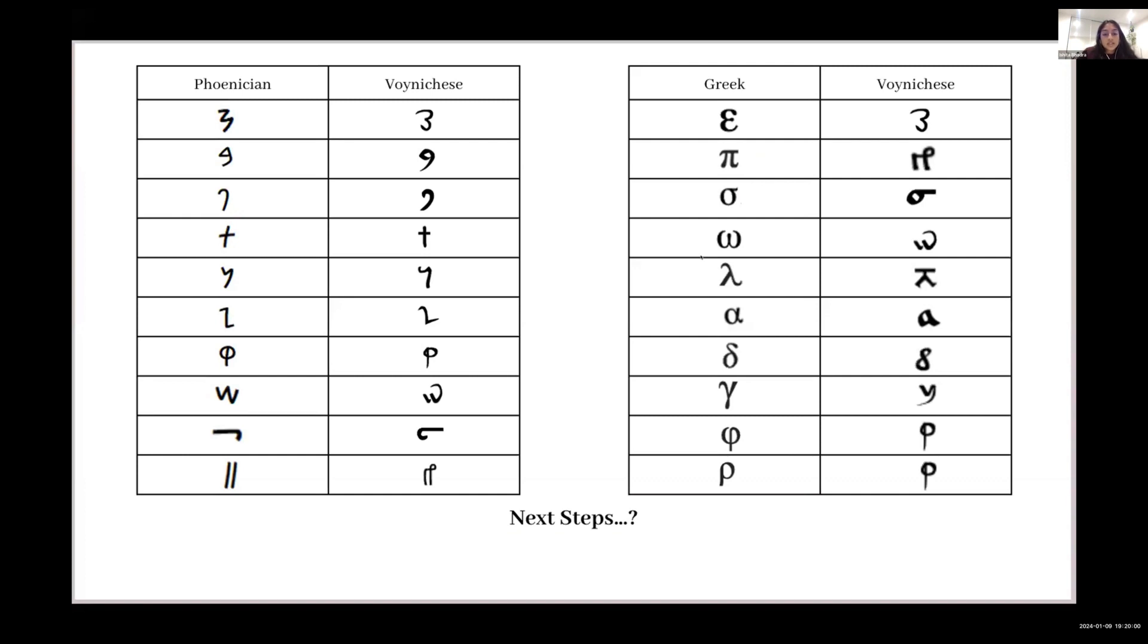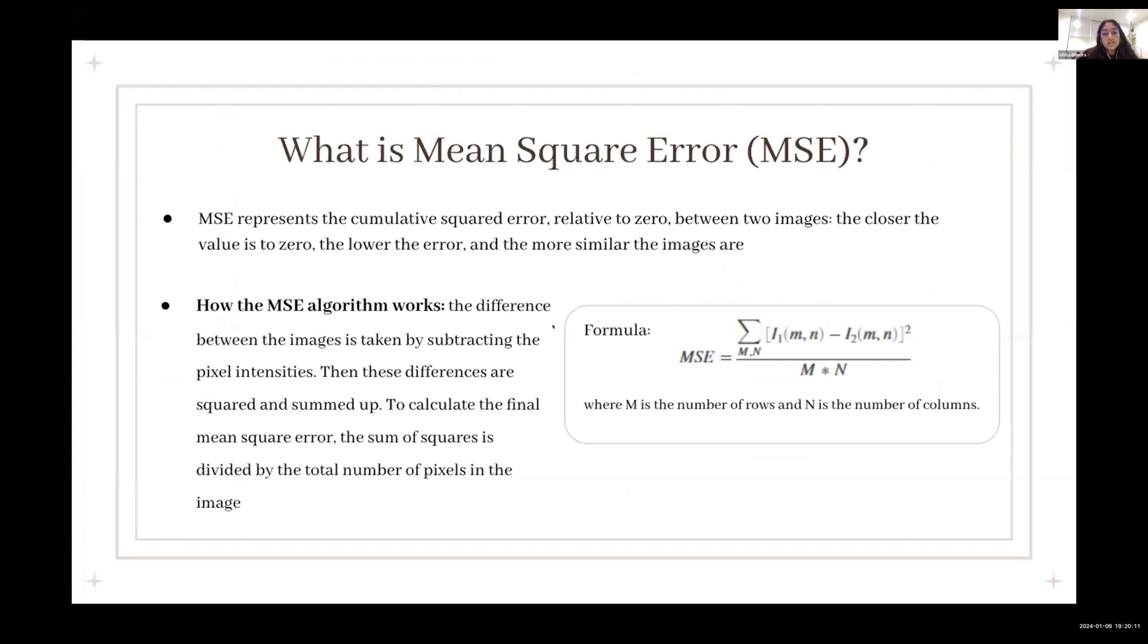For the next step, I wanted to find a way to computationally compare the degree to which the characters were similar. So to do this, I used mean square error. Mean square error represents the cumulative squared error relative to zero between the two images. Basically, the lower the value, the closer the value is to zero, the more similar the images are.